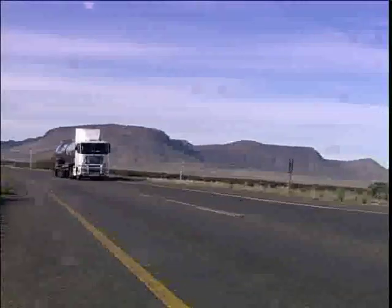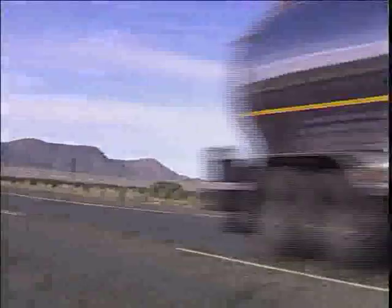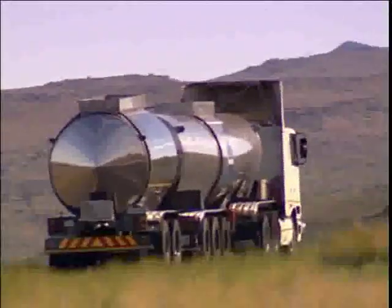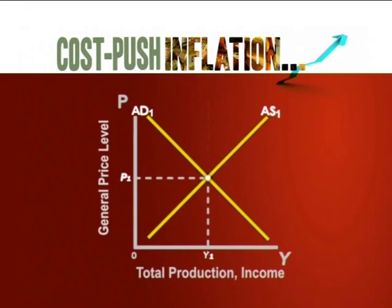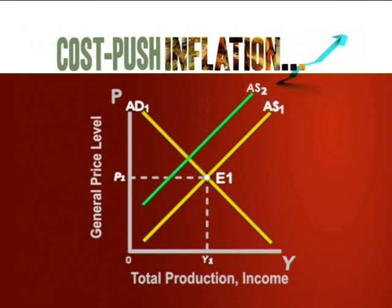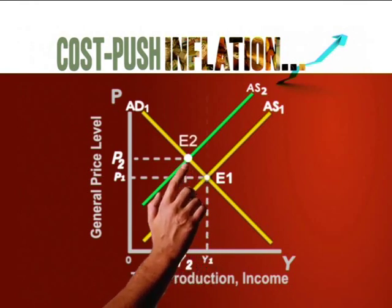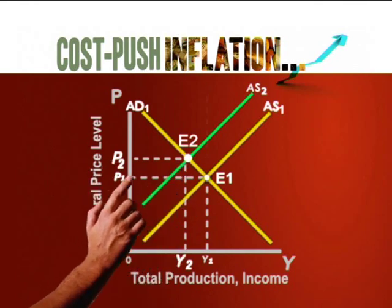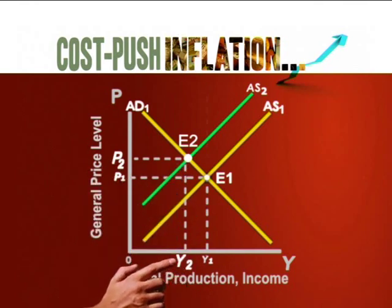Similarly, if the oil price jumps, it pushes up the cost of transporting goods, and sooner or later this is passed on to the consumer. The aggregate demand and aggregate supply curves show that the economy is in equilibrium at point E1. Any increase in the cost of production will shift the supply curve up and to the left as it becomes more expensive to produce, pushing the equilibrium to E2. The general price level jumps from P1 to P2, and income and output fall from Y1 to Y2.